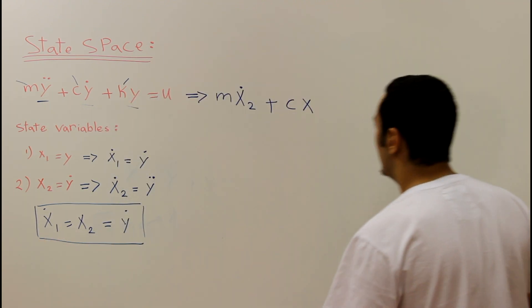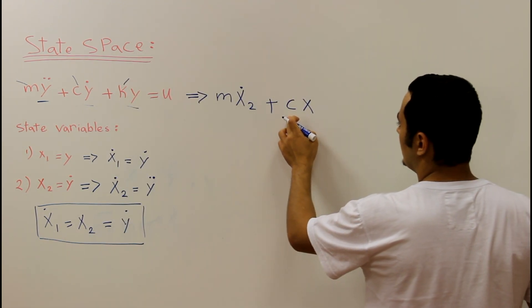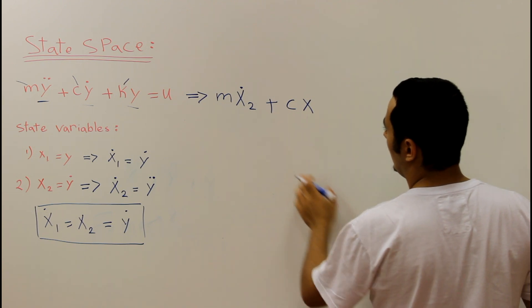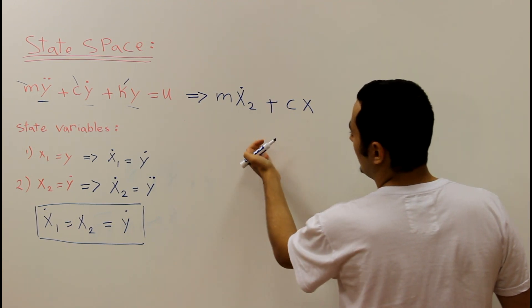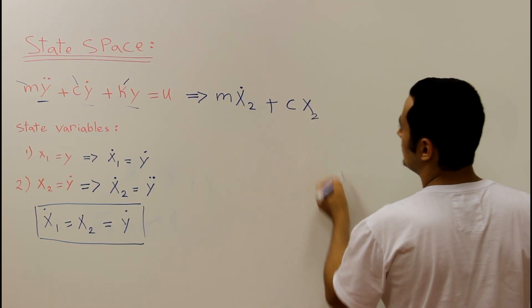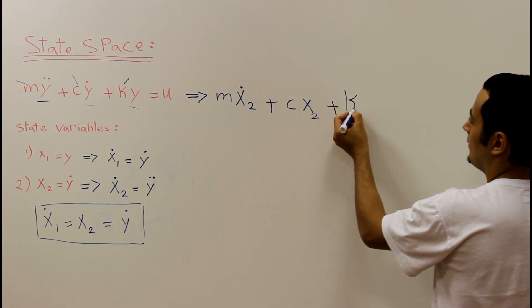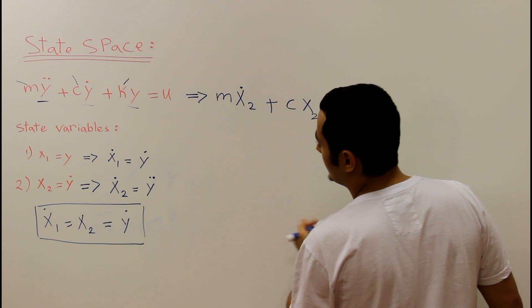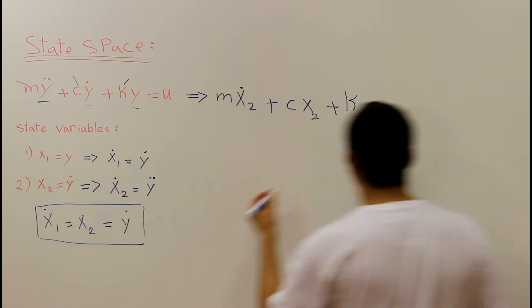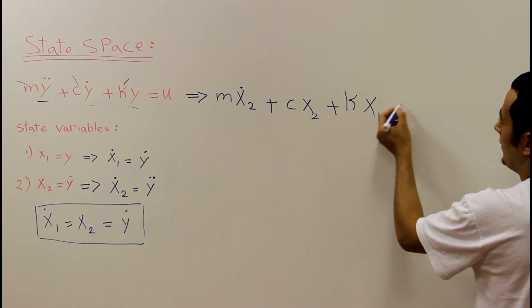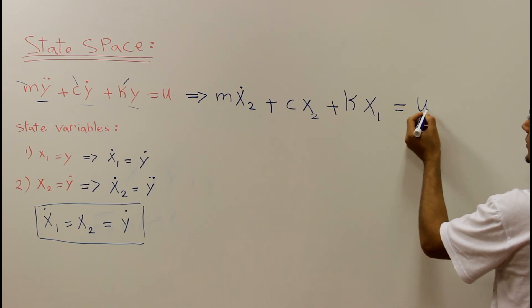So we can say that c y dot, which is x2, and finally plus k y, which is in this case x1, equal to u.